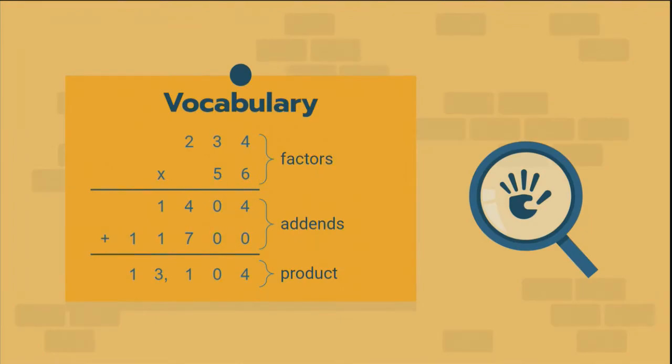Some vocabulary that we should know, because in the process of this video, I might use these words. Numbers that we multiply together are called factors. When we're doing things in fraction land, we use factors a lot. They tend to be really small, right? Single digits, maybe two digits. But it doesn't matter. Any numbers that are multiplied together are called factors.